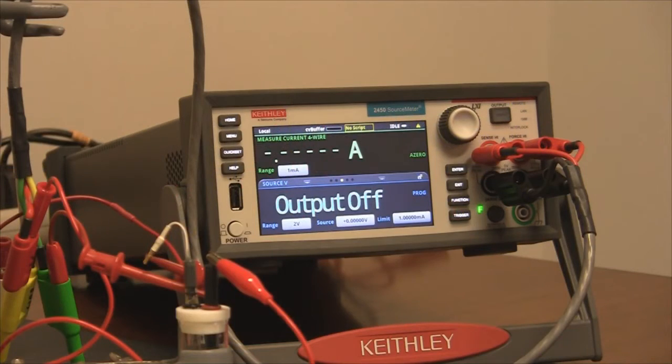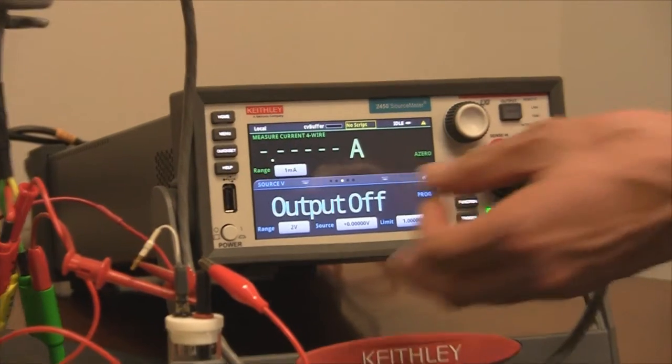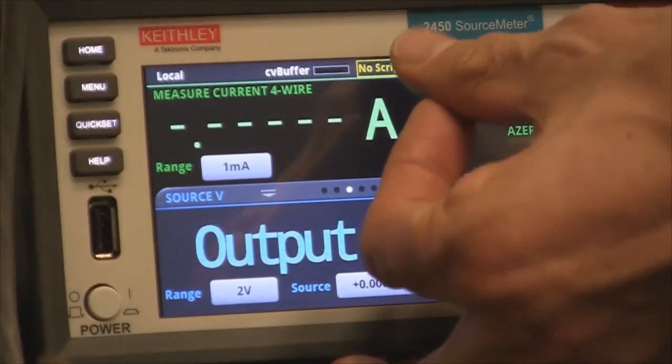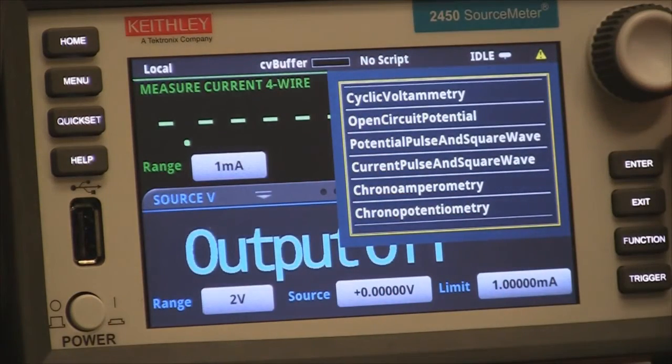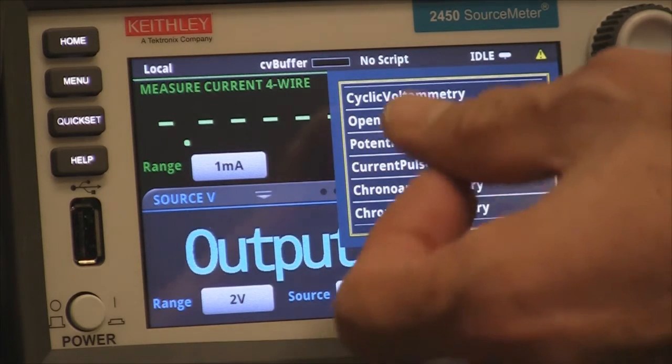Okay, so let's run the experiment. Here you can see the electrolytic cell is all connected. To run the experiment, you simply go up here where it says no script and you push the button, and you'll see all the scripts that are loaded into the instrument. All we do here is select the cyclic voltammetry script.